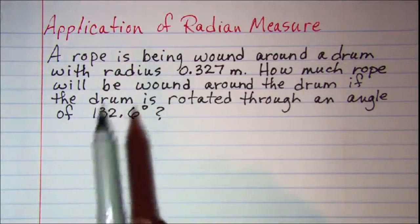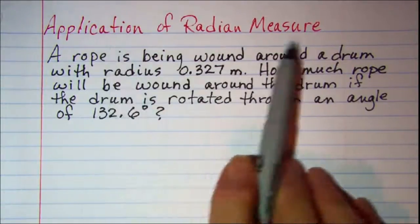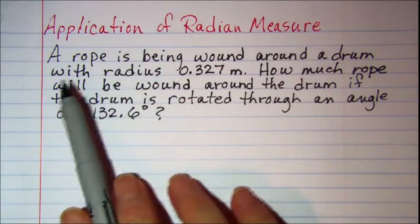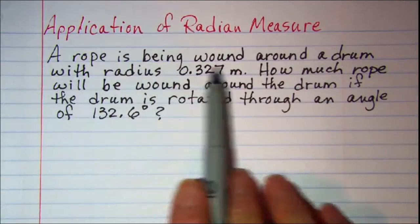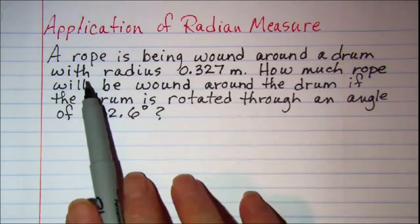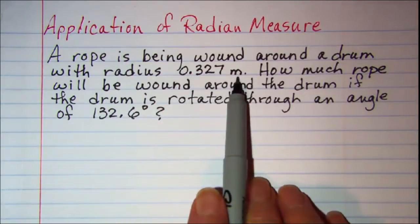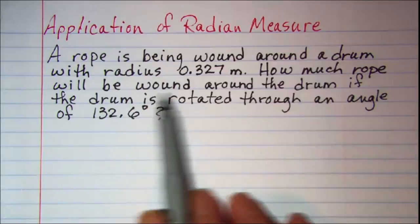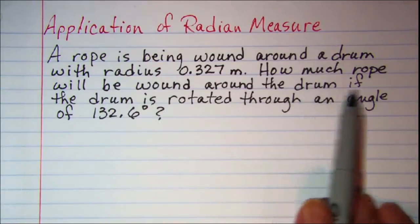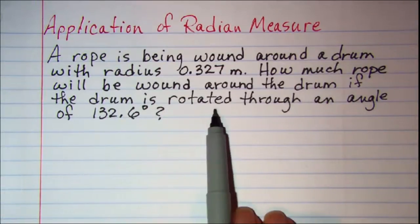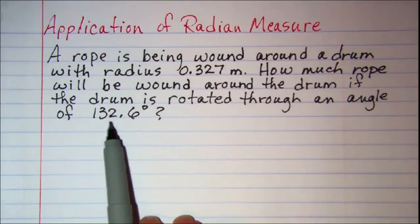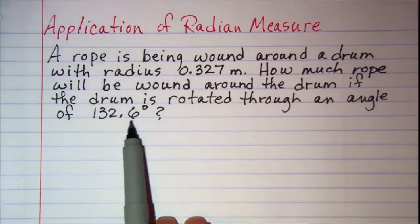In this video we'll be looking at an application of radian measure. Our problem is: a rope is being wound around a drum with a radius of 0.327 meters. How much rope will be wound around the drum if the drum is rotated through an angle of 132.6 degrees?